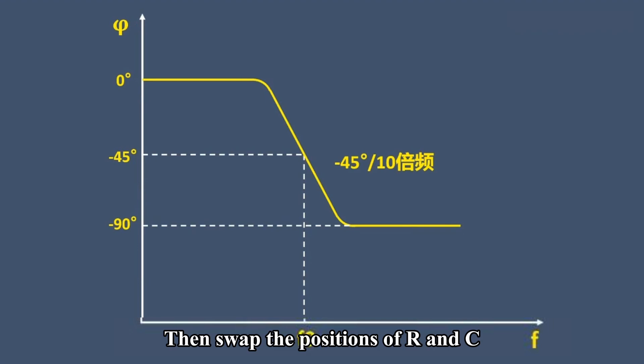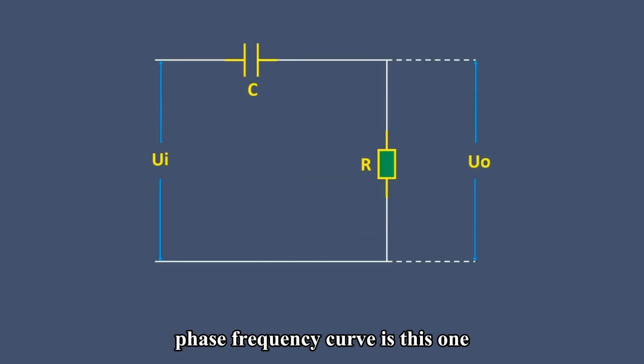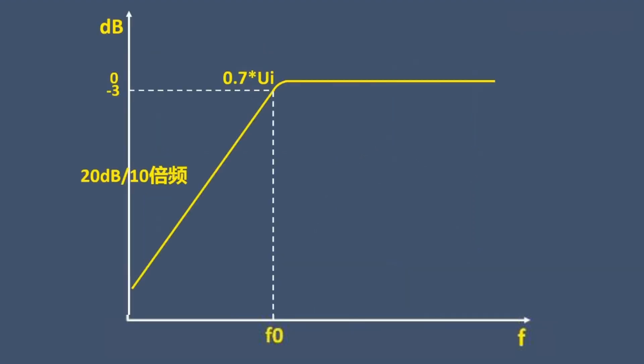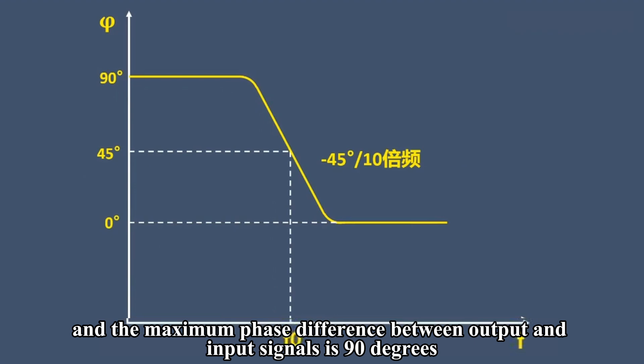Then swap the positions of R and C. Its gain frequency curve is this one, phase frequency curve is this one. The output signal phase leads the input signal, and the maximum phase difference between output and input signals is 90 degrees.